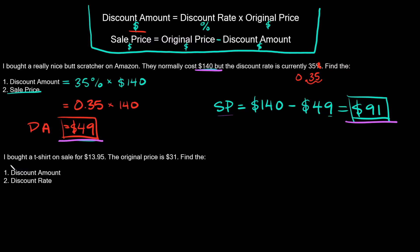Let's do one more example. I bought a t-shirt on sale for $13.95 and the original price is $31. First we're going to find the discount amount and then the discount rate. Looking at the first formula, we need the discount rate to find the discount amount, but we don't know it yet.